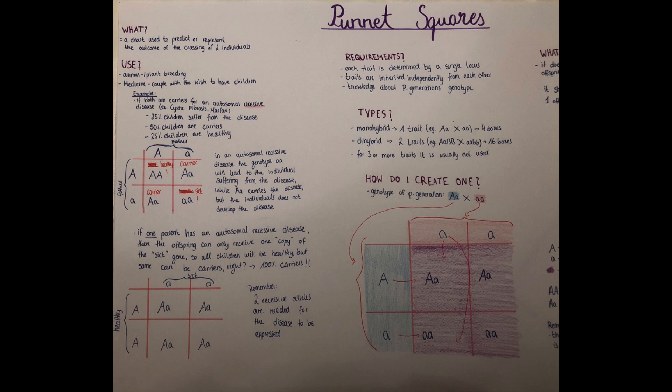First of all, what is a Punnett Square? It is a chart which is used to predict or to represent the outcome of the crossing of two individuals. Where is it used? It's used in animal and in plant breeding, so for example in dog kennels and also in medicine.